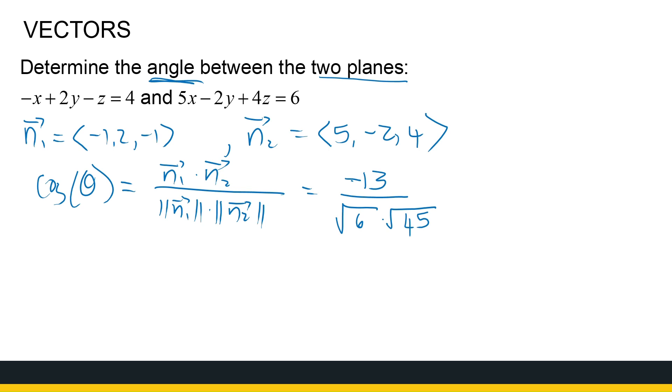So we've got cos θ is -13 over the root of 6 times the root of 45. So you can use your calculator and find the angle of theta. Now we're going to have to round it off, so it's approximately equal to 142.29 degrees. If you're working in degrees, or you can work in radians, depending on what you're working in.